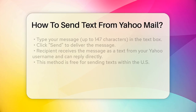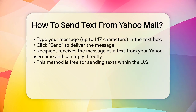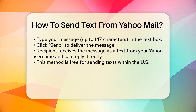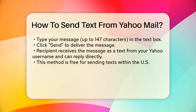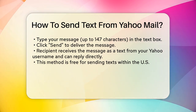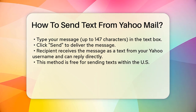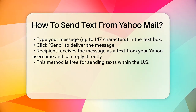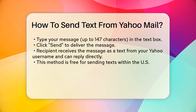Next, enter the recipient's U.S. cell phone number, including the area code, in the text bar labeled Enter a Mobile Number or Contact. Then type your message in the provided text box. Keep in mind that the message can be up to 147 characters, including spaces and punctuation. Click the Send button and the message will be sent. The recipient will receive the message as a text from your Yahoo username, and they can reply directly to continue the conversation. This method is free for sending texts to cell phones in the United States.